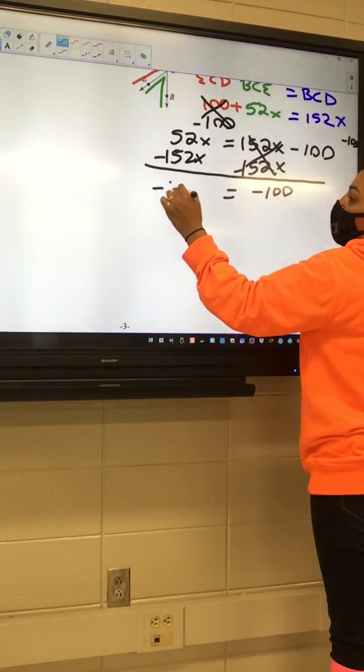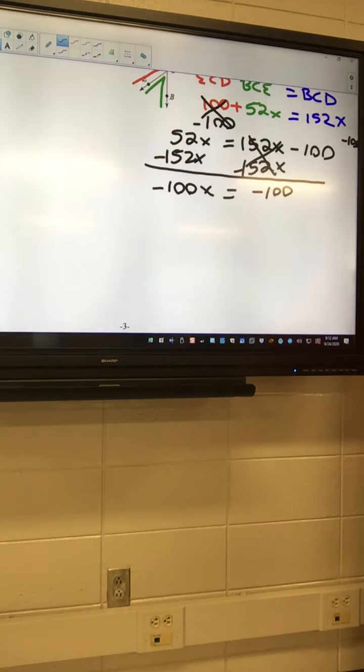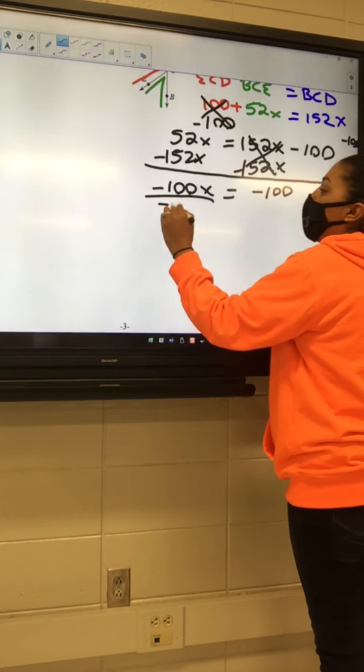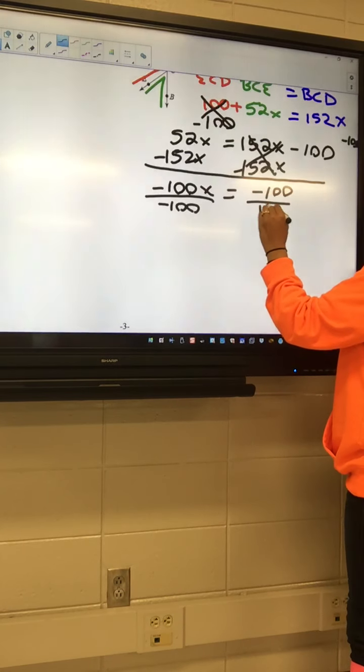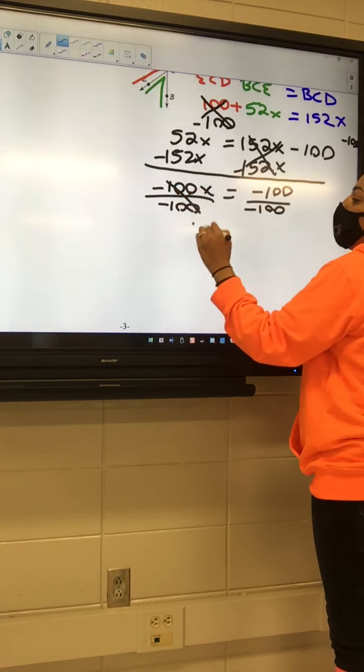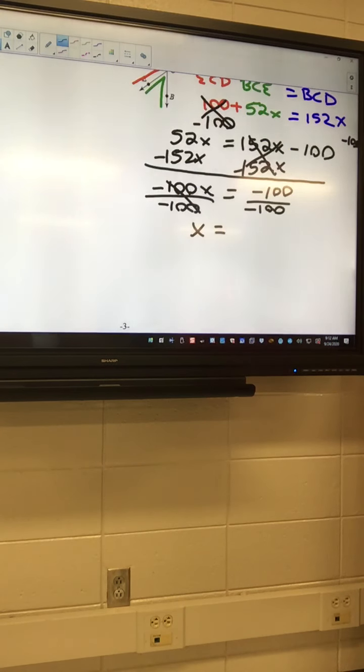Negative 100. Negative 100X equals negative 100. What's our last step always? Division. Of course. And I have a feeling it's just going to be a negative 1. So I got a negative 100 divided by a negative 100. It's 1. No, wait. So what's a negative divided by a negative? Positive. It's positive. And what's 100 divided by 100? 1. 1. So it's just going to be 1.